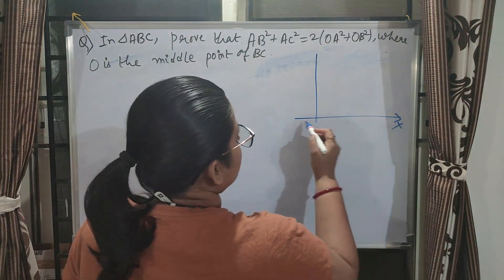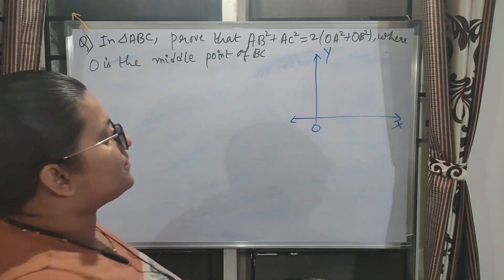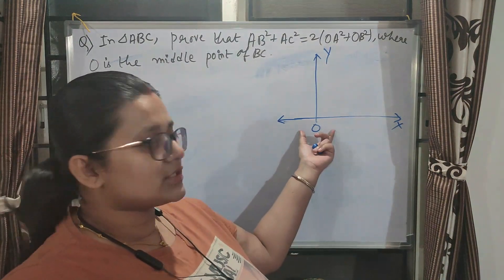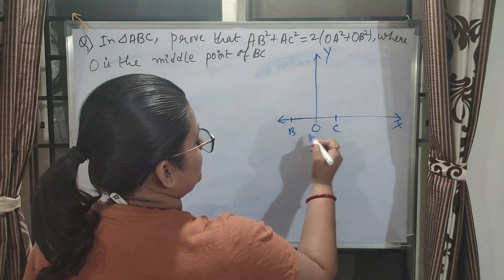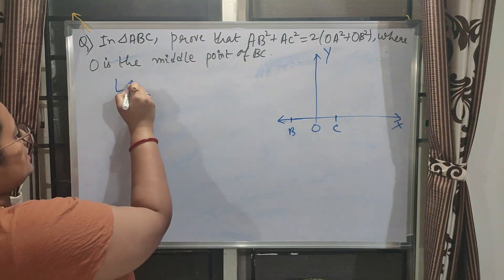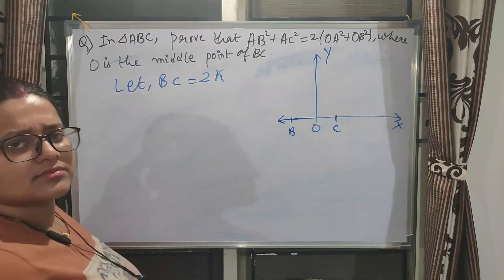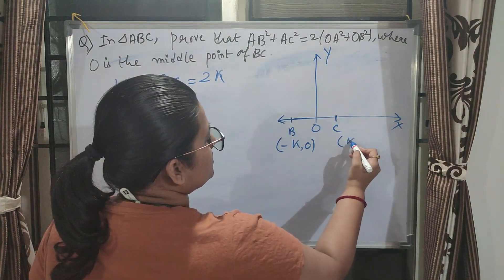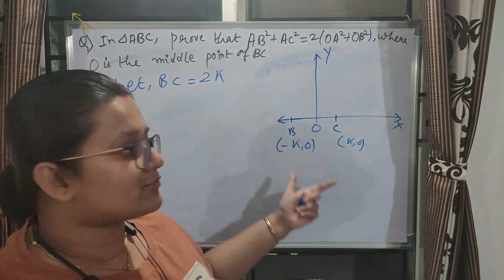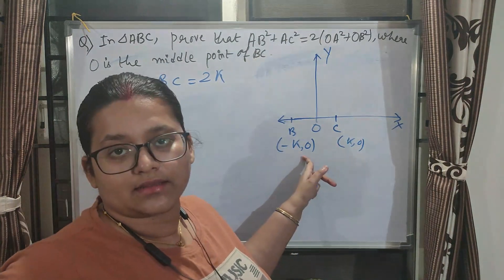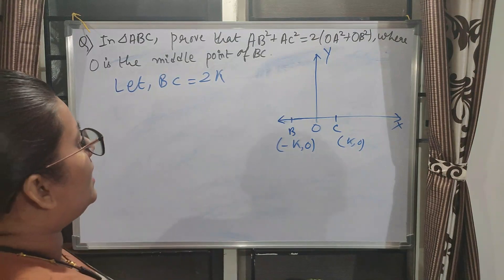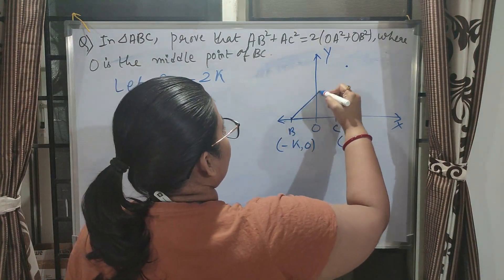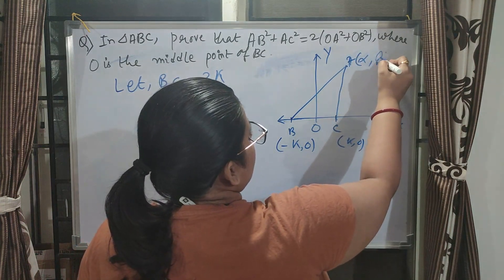First I am taking O as the origin, and it is given that O is the midpoint of BC. I draw the rectangular coordinate system. Since O is the midpoint of BC, both B and C lie on the x-axis. Let BC = 2k, so B is at (-k, 0) and C is at (k, 0), because on the x-axis the y-coordinate is 0. For point A, we have no additional information, so I take A anywhere in the coordinate system — say in the first quadrant at (α, β).